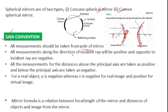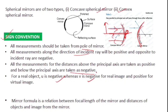All measurements along the direction of the incident ray are taken as positive, and opposite to the direction of incident ray are taken as negative. Measurements above the principal axis are positive and below the principal axis are negative. For a real object, u is negative, and v is negative for a real image and positive for a virtual object.